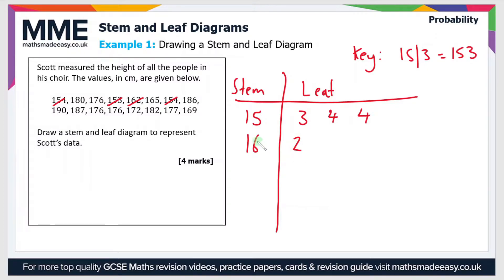And the smallest value is 162 so we'll cross that off and add it to the diagram. So we add a stem of 16 and then a leaf of 2. And then next we have 165 and then after that it's 169.